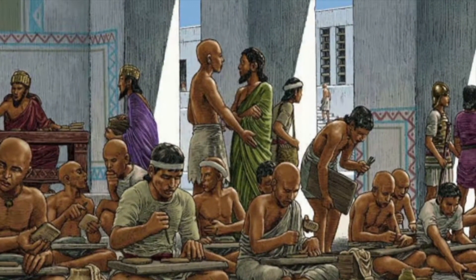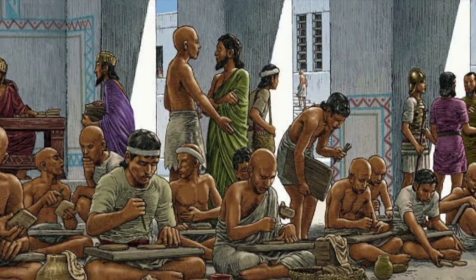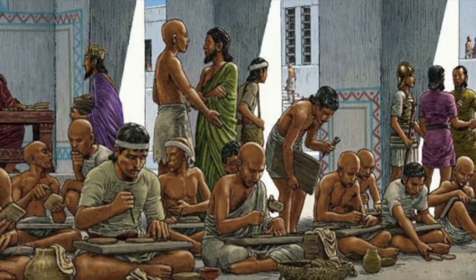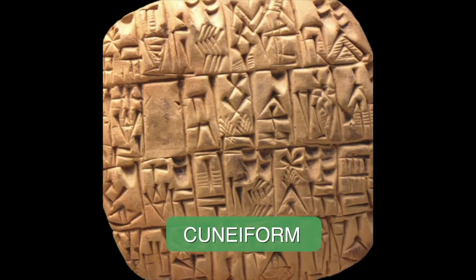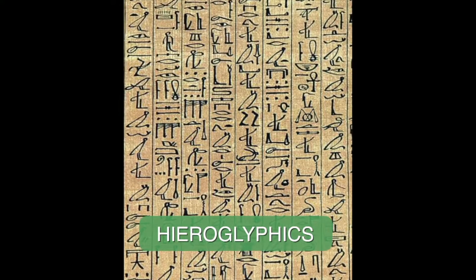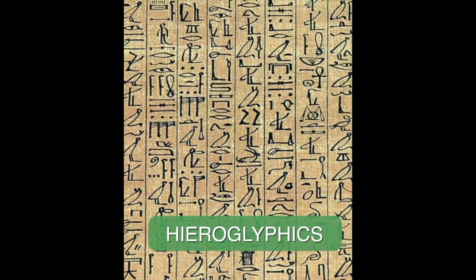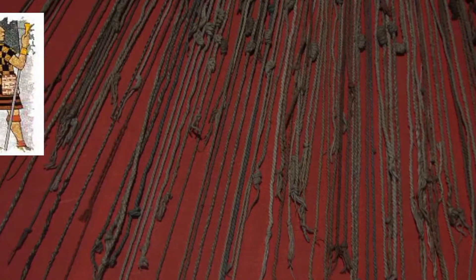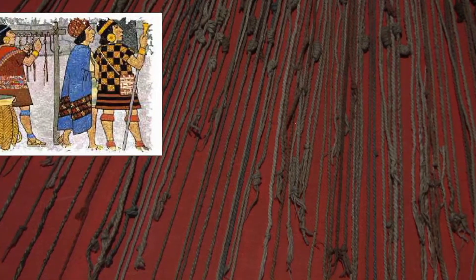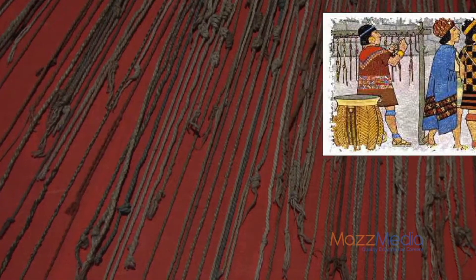However, the methods for compiling and processing transactions have changed dramatically over time. The Sumerians used cuneiform writing on clay tablets to record business transactions. Some of the oldest Egyptian hieroglyphic writing more than 5,000 years ago was used for accounting. In the Incan Empire of South America, people used knots tied in cotton and wool cords, known as quipus, to record the amount of agricultural products.